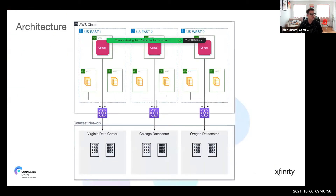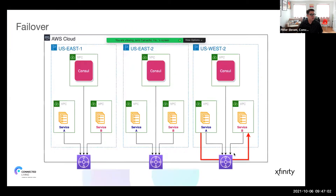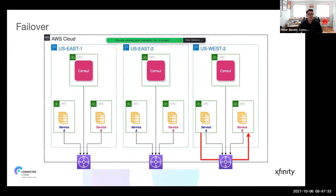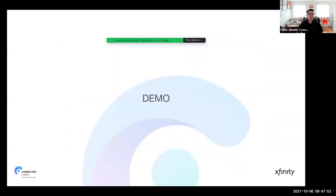What does our architecture look like? We are running in multiple AWS regions with multiple VPCs in those regions across many accounts. The VPCs are on the same network joined by transit gateways, which are also connected back to Comcast data centers. The transit gateways keep all AWS traffic in AWS and only send traffic across the direct connects if it needs to go back to Comcast. For failover, if service B is down in one region, the mesh will automatically fail over traffic to the other region.